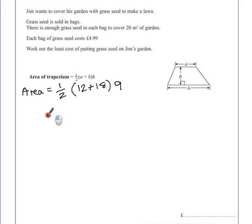Now we can do this calculation in any order, but we know because of our order of operations, we have to at least do the brackets first. So that leaves us with a half multiplied by 12 add 18, which is 30, multiplied by 9.